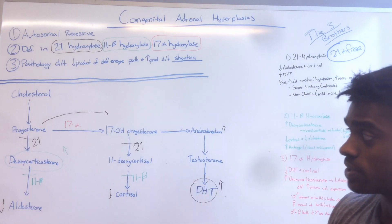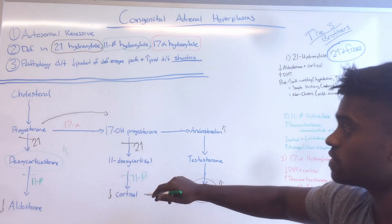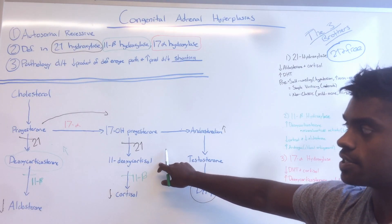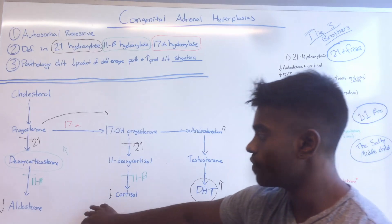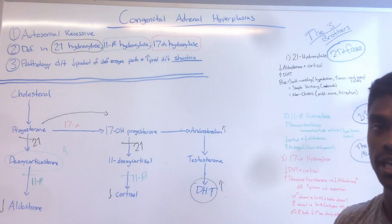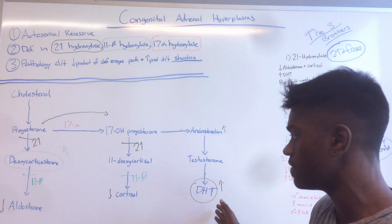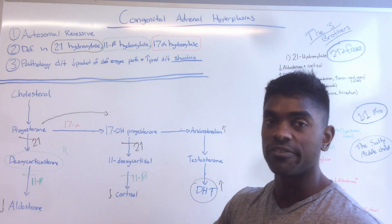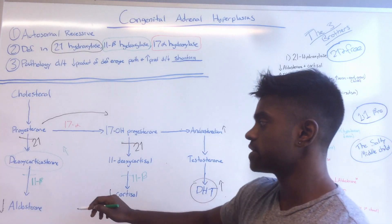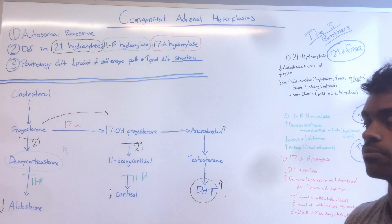With the hypertension, that's a key distinguishing factor. Because as we discussed with 21-hydroxylase, there was hypotension. So the end products could look the same, but if you get a boards question that shows a decrease in cortisol, a decrease in aldosterone, and an increase in androgens — but you also see hypertension — then you immediately have to think this is going to be an 11-beta-hydroxylase deficiency. And that's a key distinguishing point.